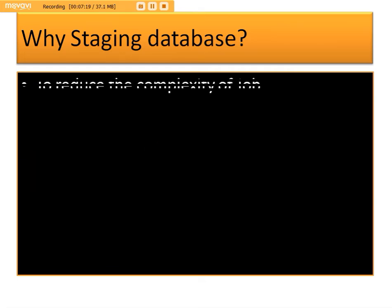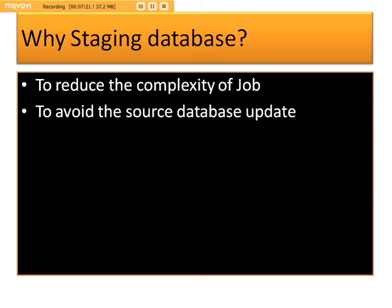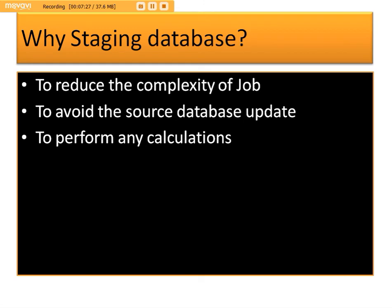At the same time, if something goes wrong and we lose any data in the data warehouse or in the source system, in that case we can use staging as a backup. As part of day-to-day transaction loads into the data warehouse, the staging database is used as a pointing table where it keeps historical data. If something goes wrong or there are data errors, we can reload the data from this staging.